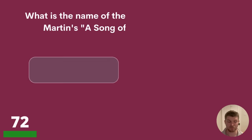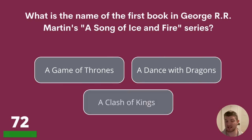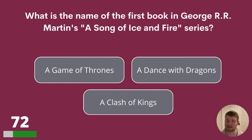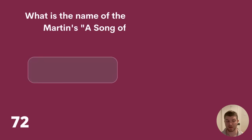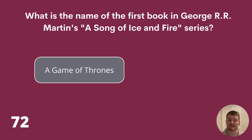Question 72. What is the name of the first book in George R.R. Martin's A Song of Ice and Fire series? A Game of Thrones, A Dance with Dragons, or A Clash of Kings? The answer is A Game of Thrones.